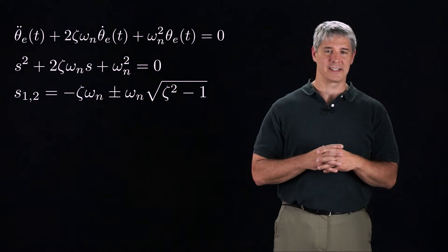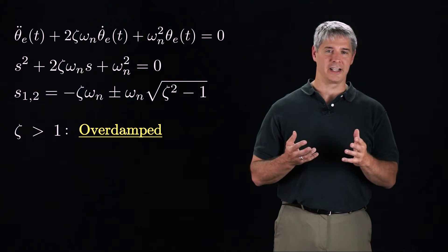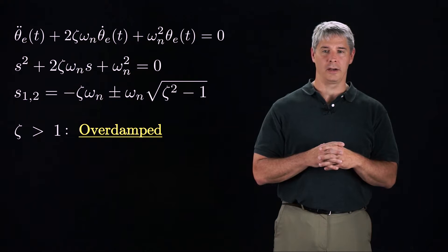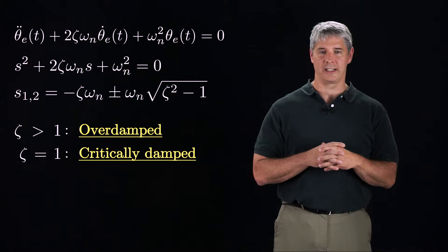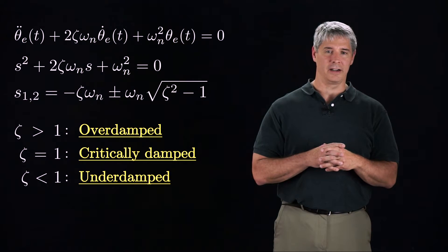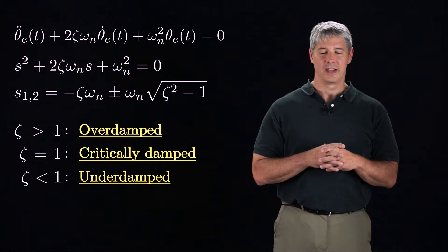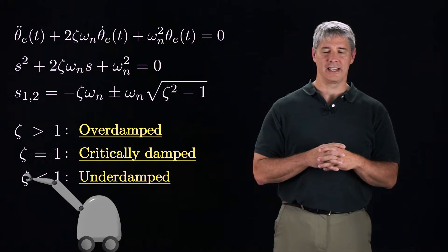We'll consider three cases depending on the damping ratio zeta. If the damping ratio zeta is greater than 1, we say that the error dynamics are overdamped. If zeta is equal to 1, the error dynamics are critically damped. Finally, if zeta is less than 1, the error dynamics are underdamped. Let's look at the details of the error response for each of these cases.